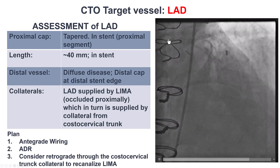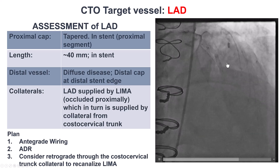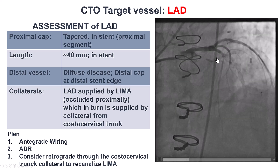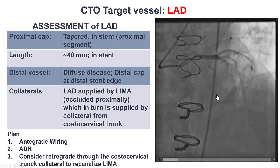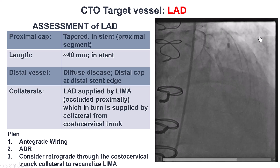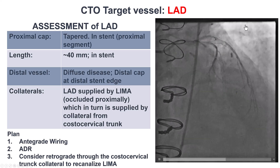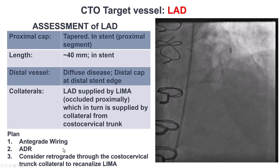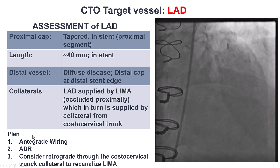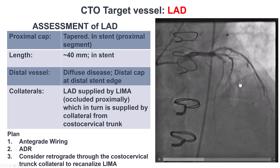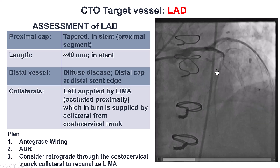This is what we have: the LAD occlusion within the previously placed stents, with a length of about 40 millimeters and a clear proximal cap. The LAD was filling mainly via the LIMA that was filling through the costocervical. We had a left radial axis with a catheter engaging the costocervical trunk. The plan was to go antegrade, because the retrograde options were not very favorable — either with wiring or antegrade dissection re-entry, and ADR would likely be challenging given the extensive area of stenting.